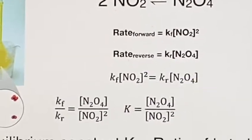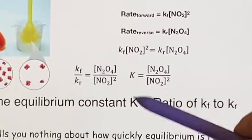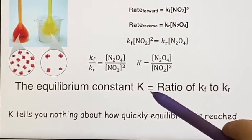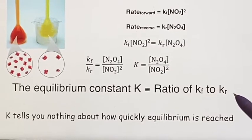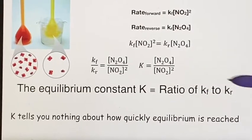And then by definition, this equilibrium constant, capital K with no subscripts, is defined to be the ratio of Kf to Kr. And then it turns out that you can use the concentrations to develop it.